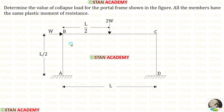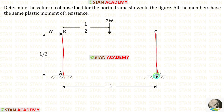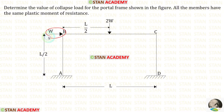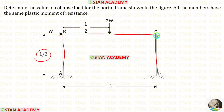In this frame there are two columns — column AB and column CD — and there is a beam BC. In the columns there are no loads. In the beam BC we have a central point load 2W. In the joint B we have a nodal point load W. The height of both columns is L/2 and the length of the beam is L.